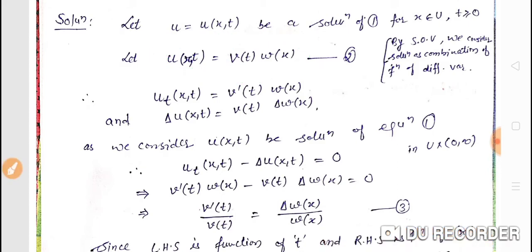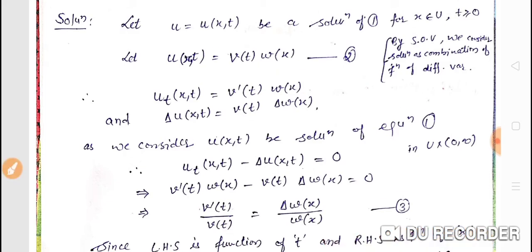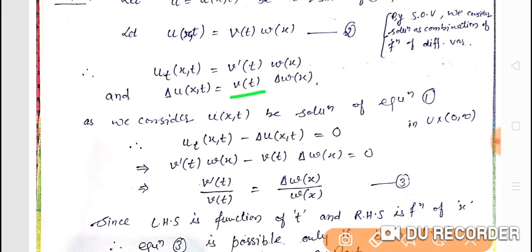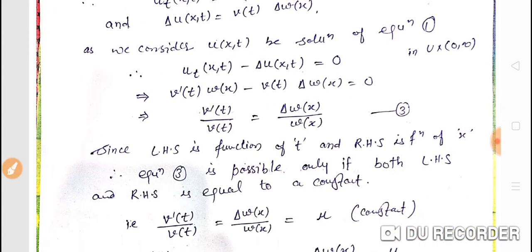Now we take derivatives. If we take derivative with respect to t, we get u_t equals v'(t) times w(x). If we take delta u, that means double derivative with respect to x, we get v(t) times delta w. Putting this in our equation u_t minus delta u equals zero, we get v'(t)w(x) minus v(t)delta w(x) equals zero. Separating variables, we get v'(t)/v(t) equals delta w(x)/w(x).